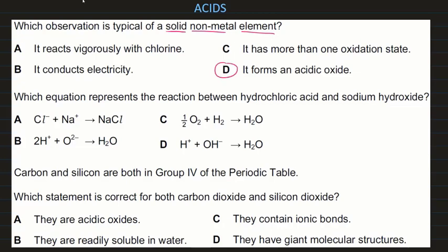Which equation represents the reaction between hydrochloric acid and sodium hydroxide? Hydrochloric acid produces H⁺ ions in water and OH⁻ ions are produced by hydroxides, so they both react to form water. D is the correct answer.